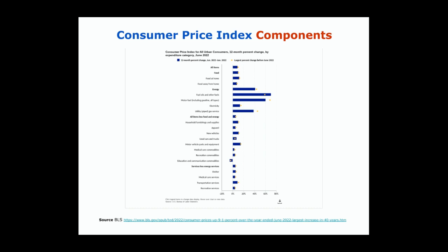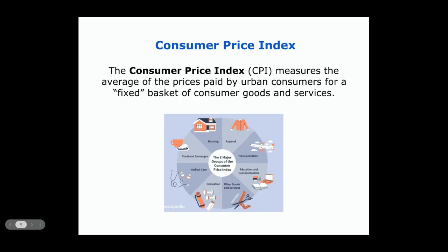The Consumer Price Index is a composite — there are many parts that go into making it up. At this particular time, you can see that things related to energy, fuel oil, and electricity are increasing at a very rapid rate, while some things are increasing at a slower rate. The Consumer Price Index measures the average of prices paid by urban consumers for a fixed basket of consumer goods and services. It's meant to represent the things people spend their money on: housing, transportation, health care, and food. There are actually eight categories.